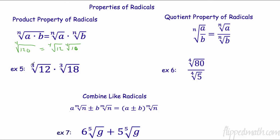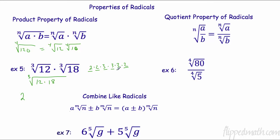I want to do the cube root of 12 times the cube root of 18. I can put them under the same radical. A lot of you will multiply 12 times 18 in your calculator, but then you'd have to break that big number down. Instead, keep them separate: 12 is 4 times 3, and 18 is 9 times 2. I need three of the same — I have three 2s so I take a 2 out, and I have three 3s so I take a 3 out. Nothing left inside, so 2 times 3 is 6, and we are done.